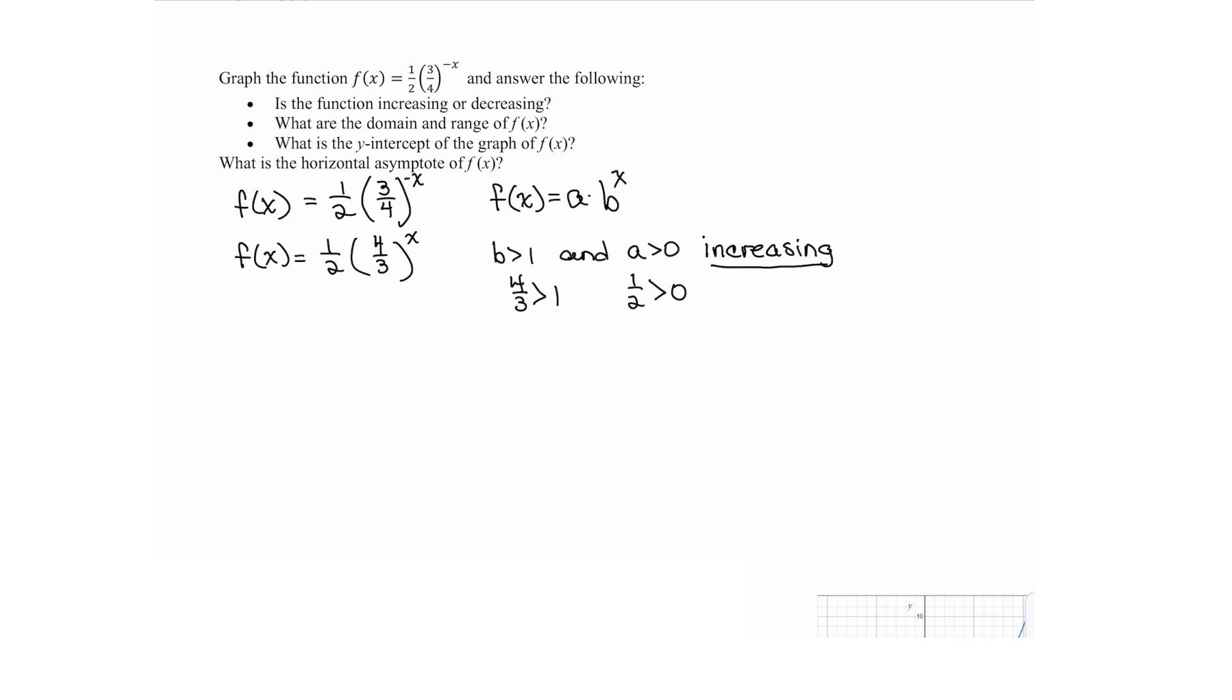Now what about the domain and the range? Well the domain of an exponential function is the set of all real numbers so that's negative infinity to infinity. What about the range? Well when we look at the range since our coefficient a is greater than 0, our range is greater than 0. So we have parentheses at 0 then off to infinity for our range and we'll verify that when we look at the graph.